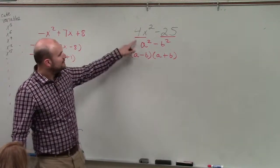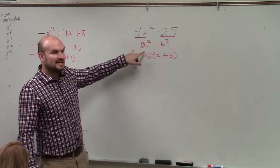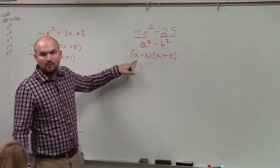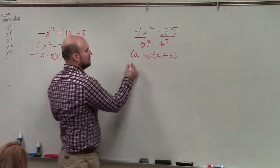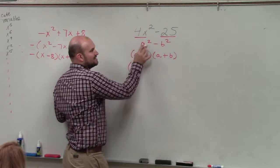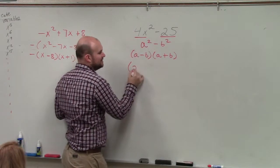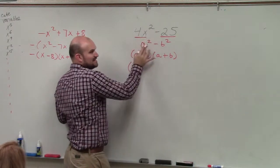So if we're saying 4x squared is a squared, I need to figure out what the a is, right? So if 4 is a squared, then a would just be 2. If x squared is a squared, then a would be x.